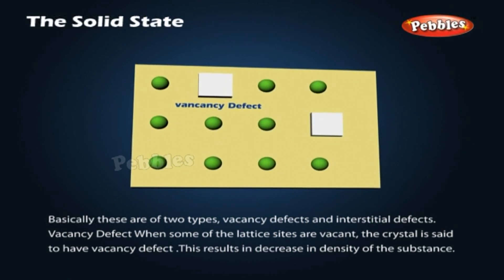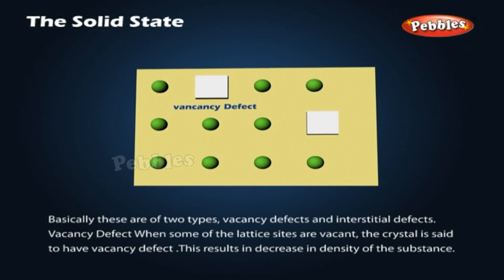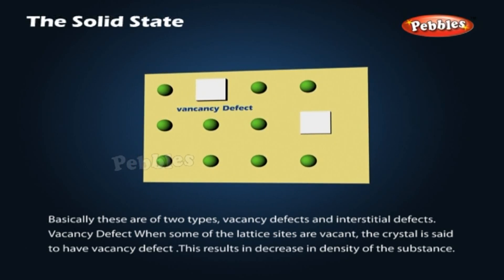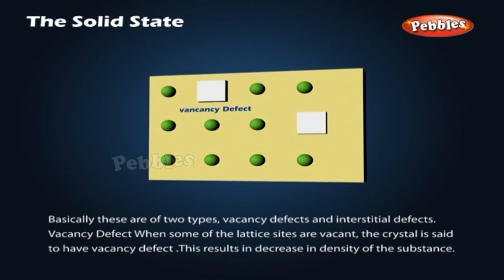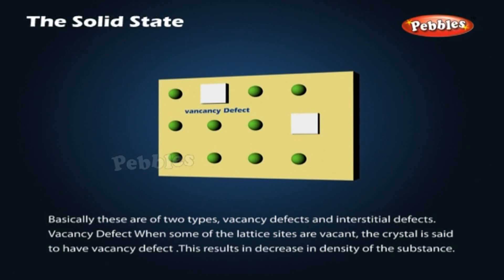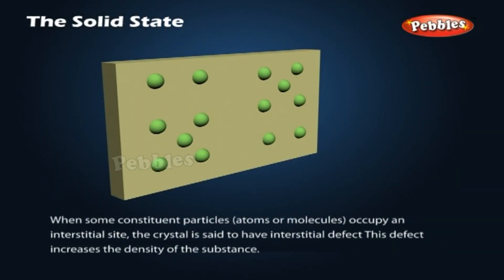Vacancy defect: when some of the lattice sites are vacant, the crystal is said to have a vacancy defect, which results in a decrease in the density of the substance. Interstitial defect: when some constituent particles occupy an interstitial site, the crystal is said to have an interstitial defect. This defect increases the density of the substance.